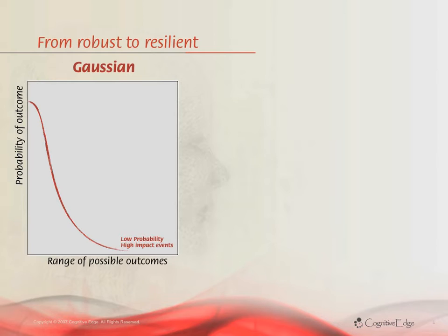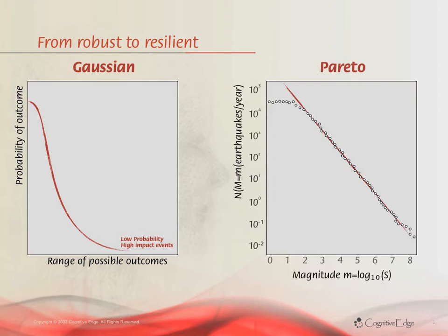There are two problems with this. One is that so-called low-probability events seem to be happening more frequently of late, and there is a reason for that: in nature we more frequently see Pareto distributions, not Gaussian distributions.